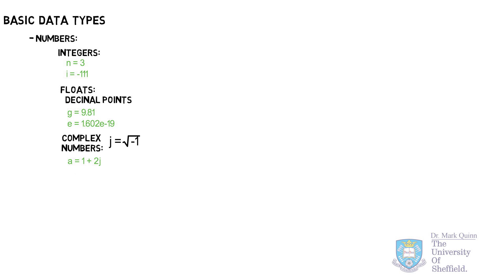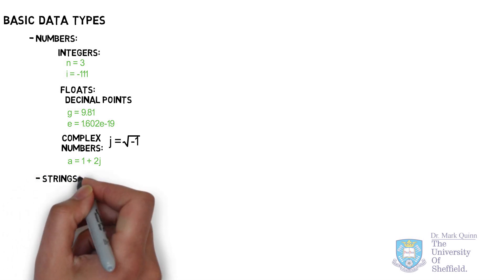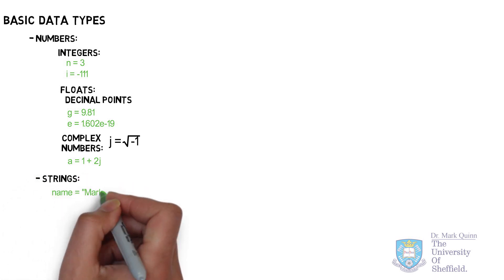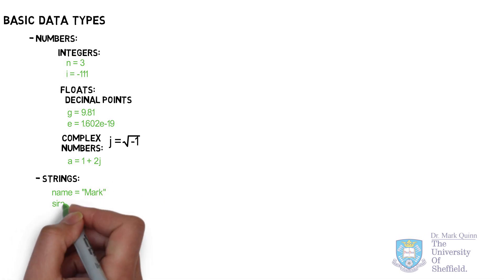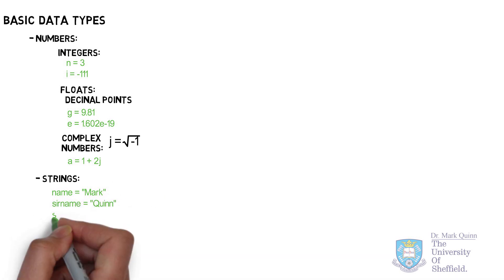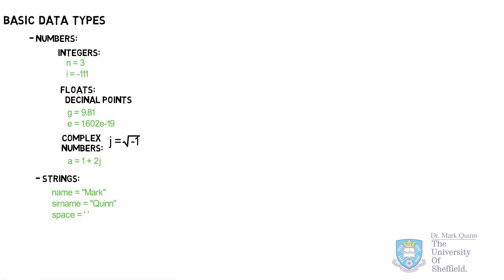Besides numbers, we also have strings, which resemble words. Each string is comprised of elements or letters, and they're defined using quotation marks, such as name and surname, or even a space, which is an empty character.